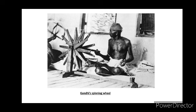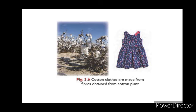Which great leader of India used to spin cloth using a charka? He is Mahatma Gandhiji. Gandhi used the spinning wheel as a symbol in his struggle for India's independence and economic self-sufficiency. The charka was used by Gandhi to spin thread and make his own cloth while he was held as a political prisoner.